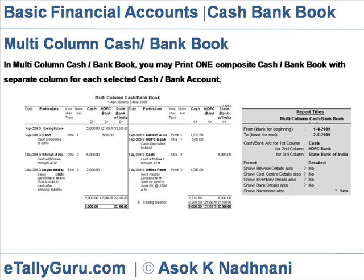At the multi column cash bank book printing screen, select up to three cash bank accounts from the list of cash bank accounts for each column. Set other options and click yes to print the multi column cash bank book.